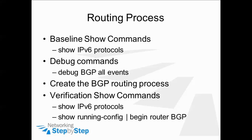In this video cheat sheet, I'll be configuring the IPv6 router process for BGP. I will start off with the baseline show command, show IPv6 protocols, to display general information about IPv6 protocols running on the router. Then I'm going to enable a debug command, debug bgp all events, to see how things unfold as I configure the IPv6 router process for BGP. I'll finish with the same baseline command, show IPv6 protocols, and show running config, to see what changed.